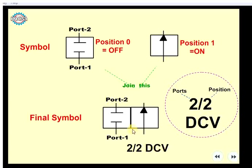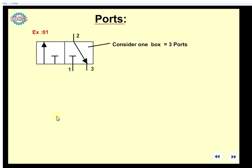These are two ports and each port is two. Each position is two. The numerator is the number of ports, and the denominator is the number of positions. This is called DCV.